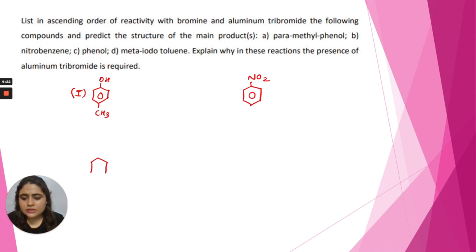Structure 3 is phenol. This is structure 3. And structure 4 is meta-iodotoluene. This is structure 4. This is structure 2.